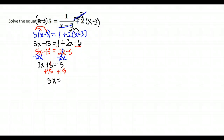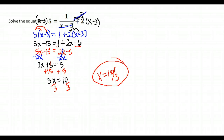Continuing to solve: 3X equals 10. Dividing both sides by 3, our final solution is X equals 10 thirds. That's a bit of an unusual answer, but it's correct. Checking back: does 10 thirds minus 3 make the denominator zero? It does not, so our answer X equals 10 thirds is valid.